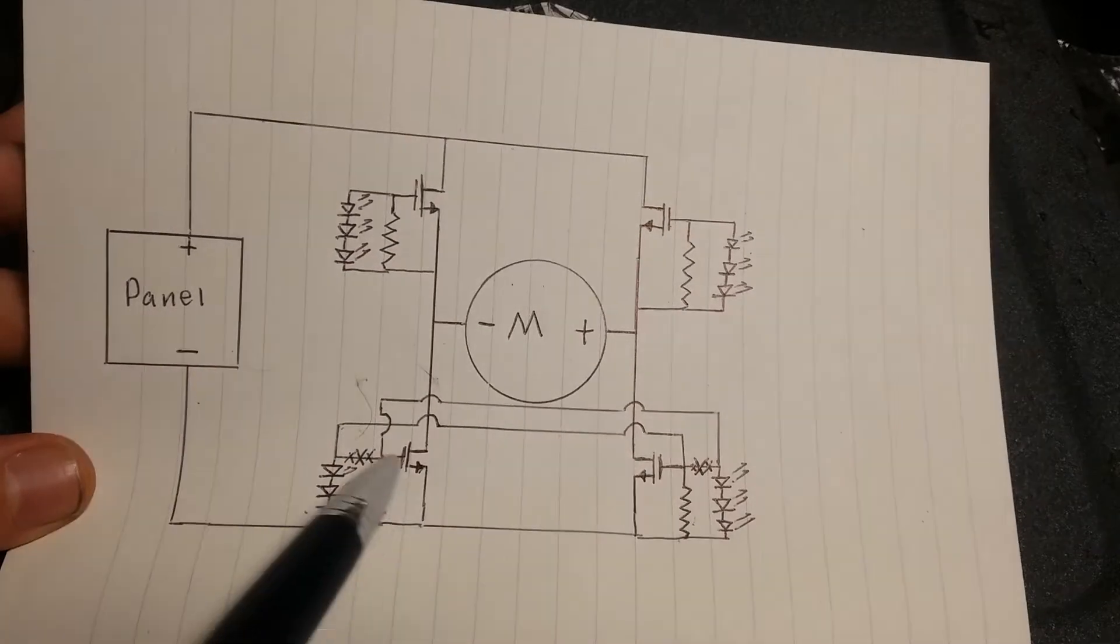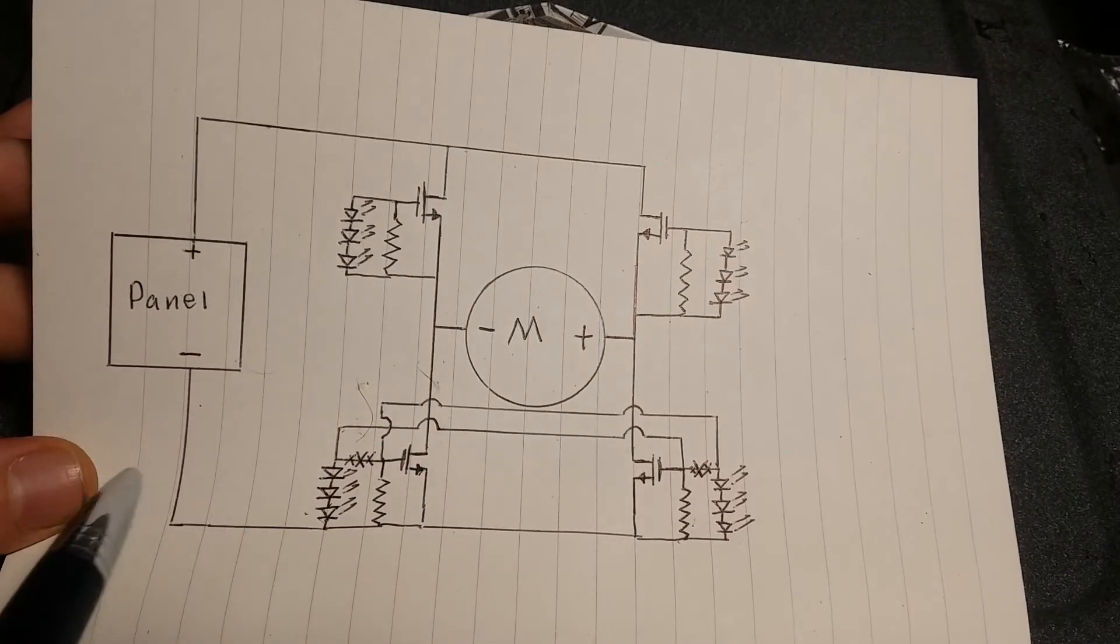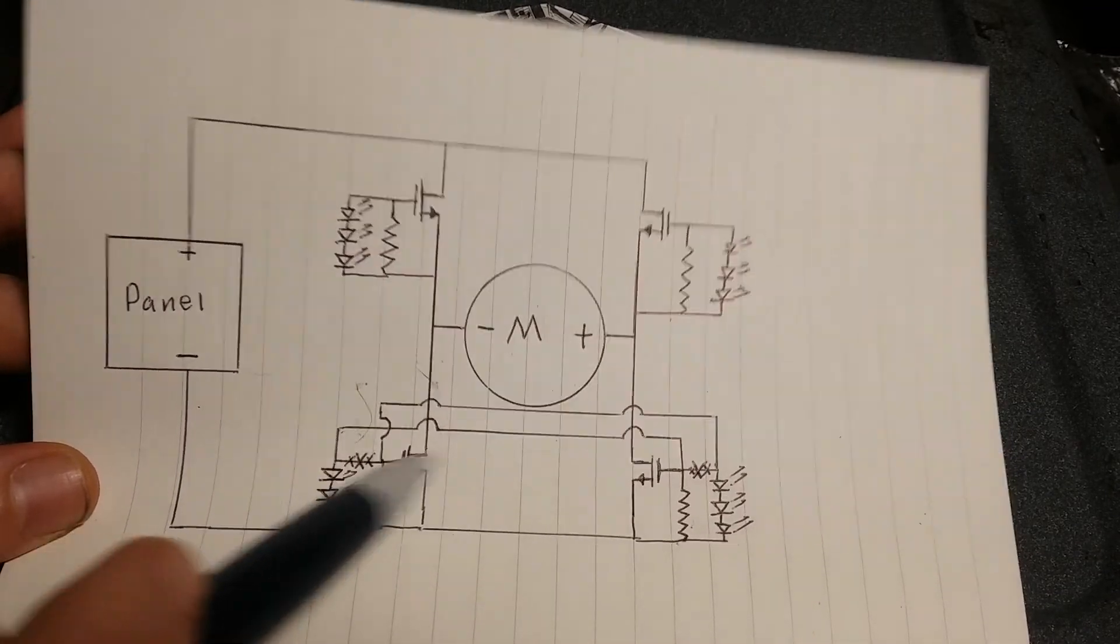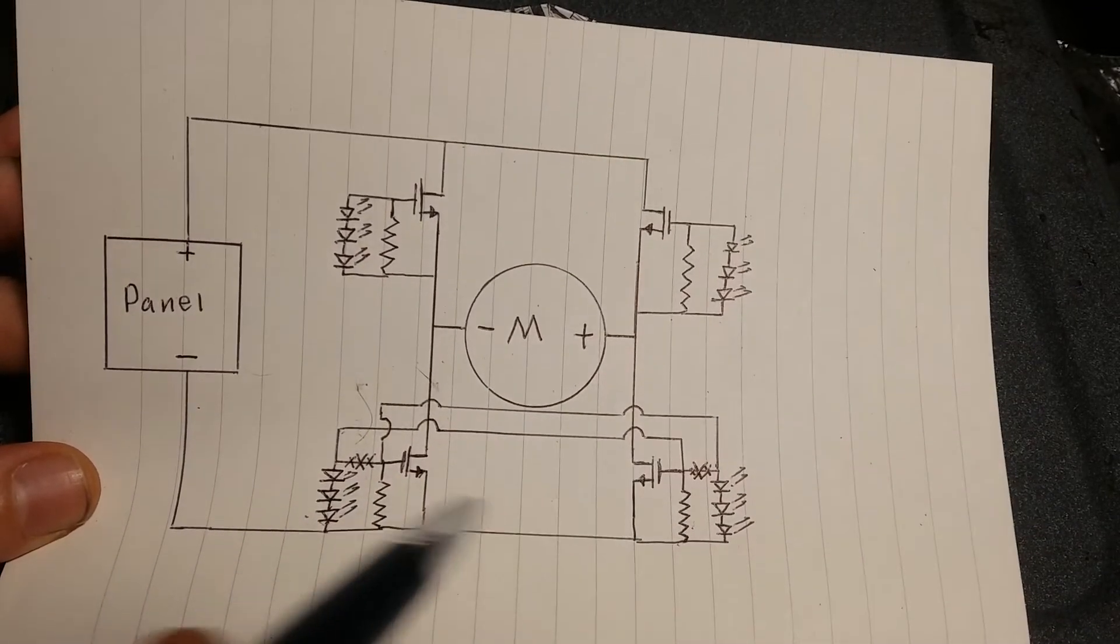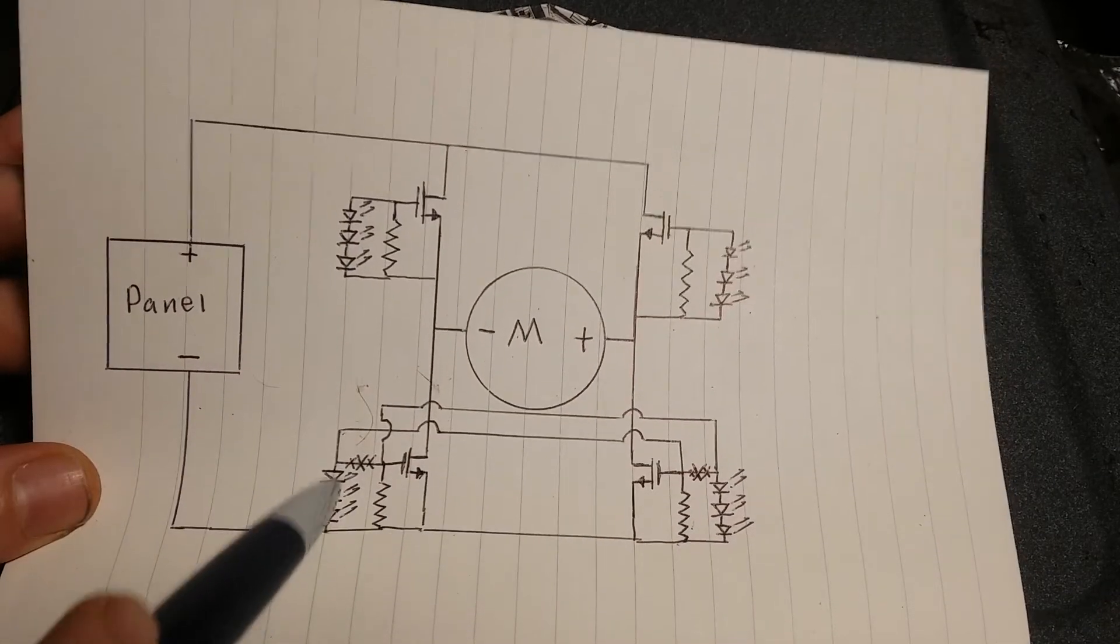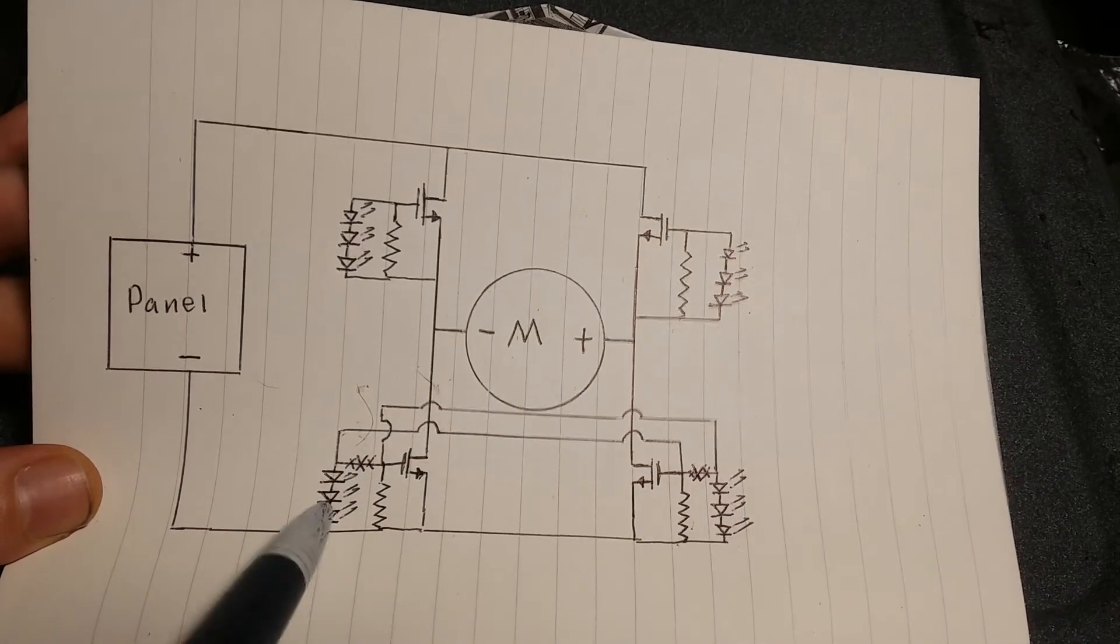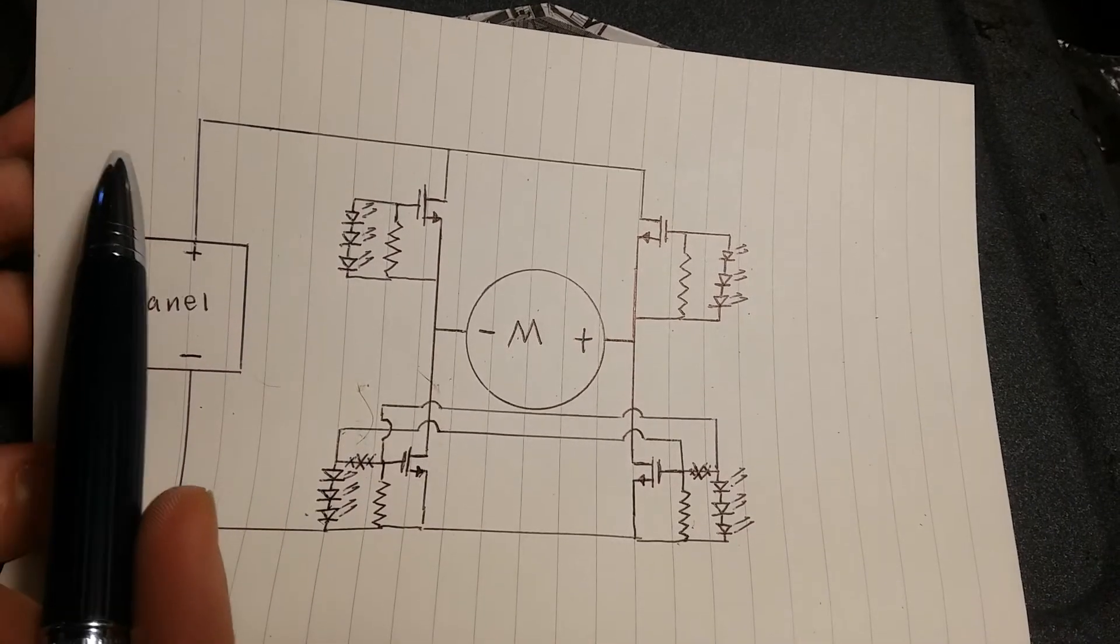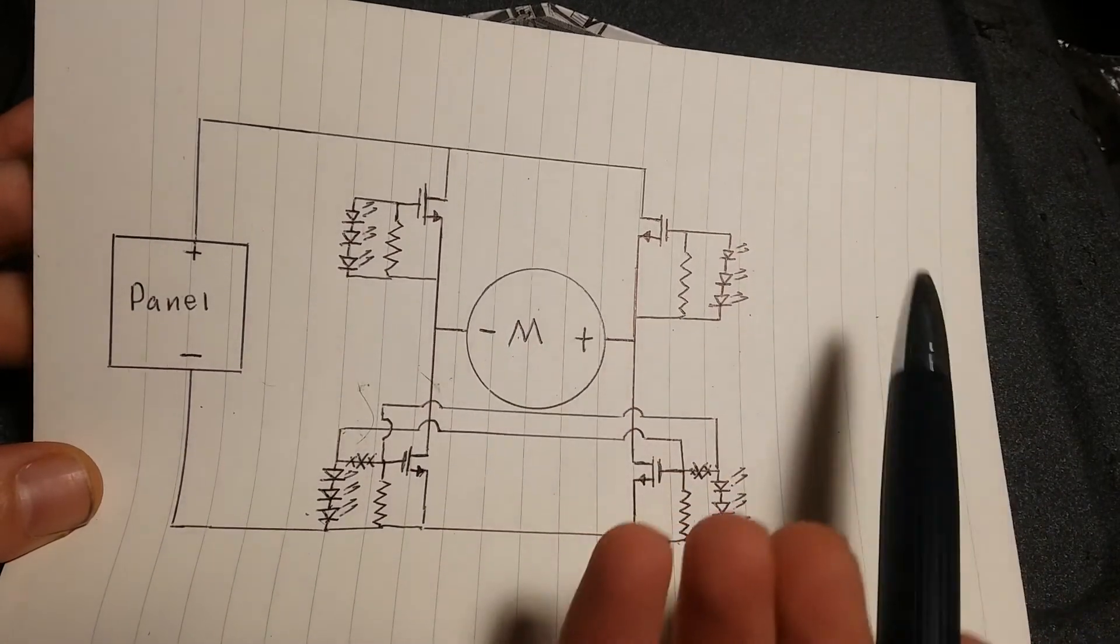And so basically you just make an H-bridge out of your MOSFETs. And notice, ignore these X'd out connections. Those aren't real. Notice these are connected across like that. And so these LEDs are actually going to be the ones on one side of the panel. These are going to be the ones on the other.